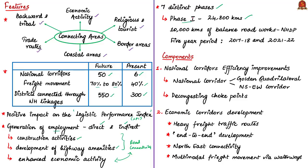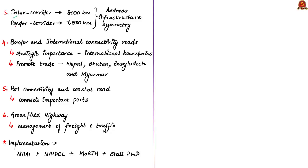Phase I also includes 10,000 kilometers of balance roadworks under the National Highway Development Programme, NHDP. Bharat Mala Phase I is to be implemented over a five-year period from 2017-18 to 2021-22. The components of Phase I are: National Corridor Efficiency Improvements, Economic Corridors Development, Inter-Corridor and Feeder Roads, Border and International Connectivity Roads, Coastal and Port Connectivity Roads, and Expressways.